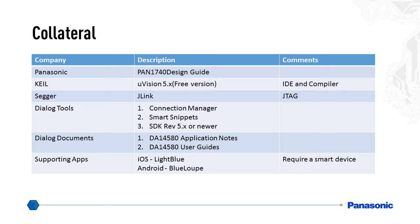The collateral consists of documents and tools. We advise you to start with the Panasonic PAN 1740 design guide. You will also need the Keil, which is an IDE and a compiler, the J-Link from SEGGER, which is a JTAG software, some Dialog tools consisting of the connection manager, Smart Snippets, and the SDK. You can find many relevant documents at the Dialog website. We also recommend supporting apps: for iOS, Light Blue, and for Android, Blue Loop, though you can use any other app.